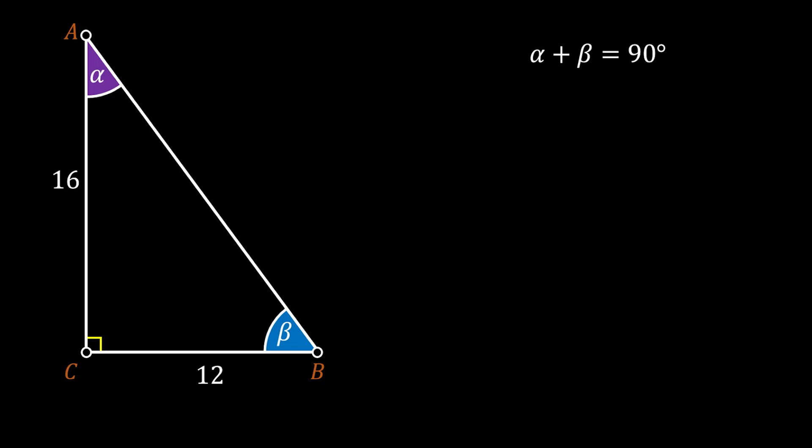Now we will use the Pythagorean theorem to calculate the hypotenuse of our triangle. We can say that hypotenuse AB squared is equal to leg BC squared plus the leg CA squared.